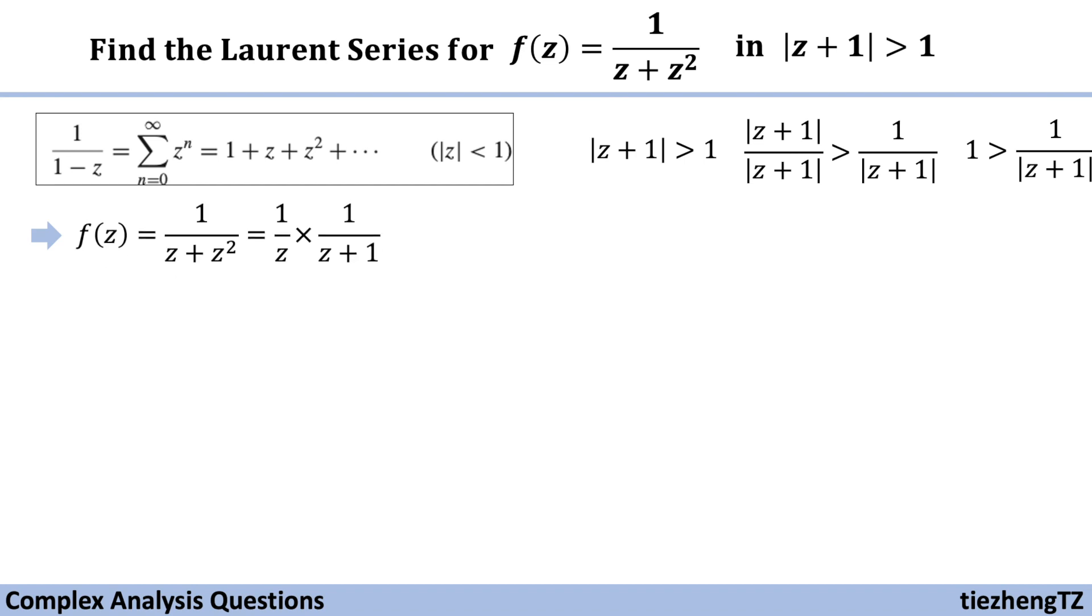Change that to 1 over z times 1 over z plus 1. In order to have 1 over z plus 1 in the denominator part, let's do something like this.